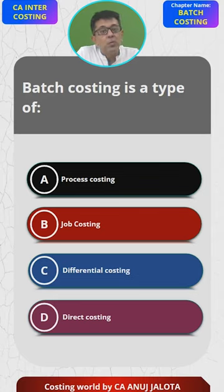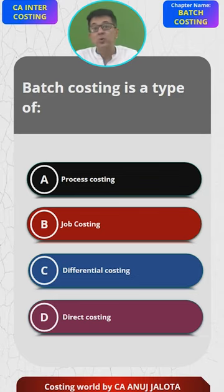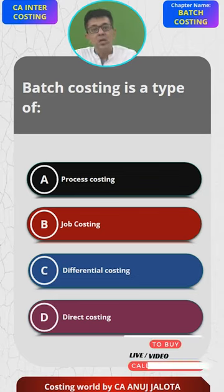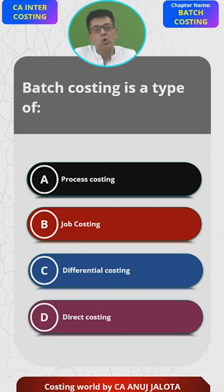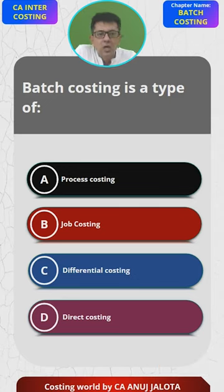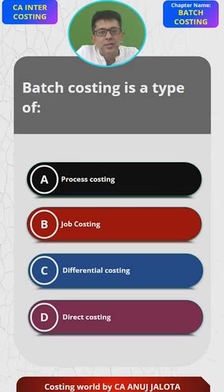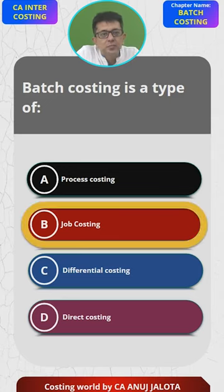They all belong to the same design, so one batch becomes one unit for you initially. Once you find the cost of one batch, you divide by the number of units to find the cost of each unit. So the answer here should be B — job costing. That is the correct answer.